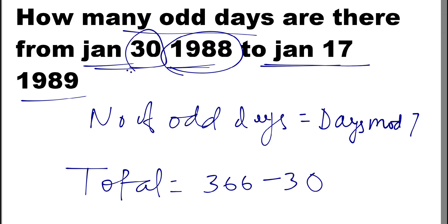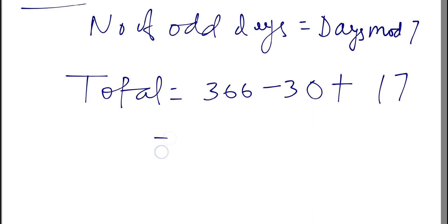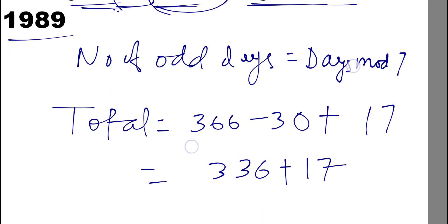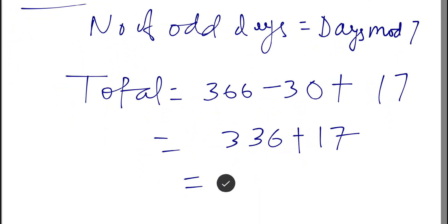We can remove these 30 days from here and just add this 17. So we will get 336 plus 17. We will get 353.